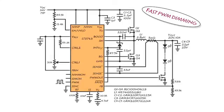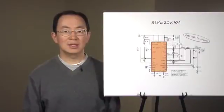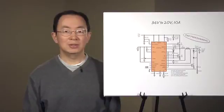Input is 36V typical and output is 20V for LEDs in series. This circuit design allows the LED current to change from zero to full current in a few microseconds.